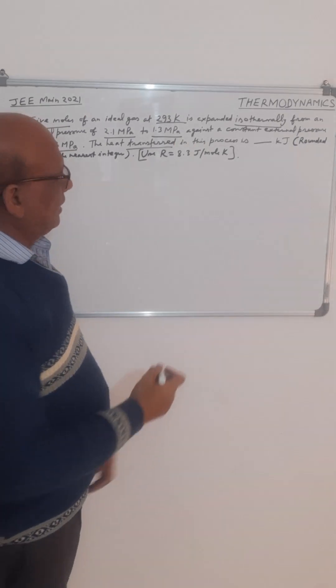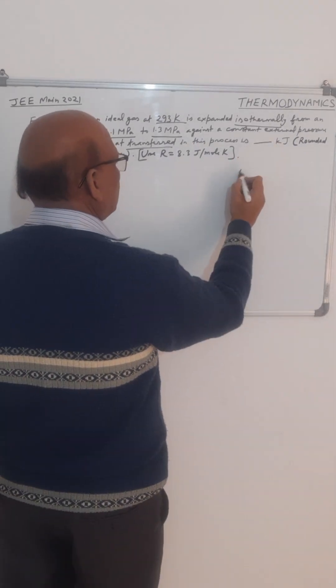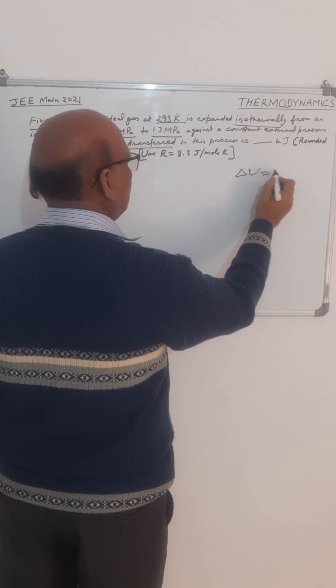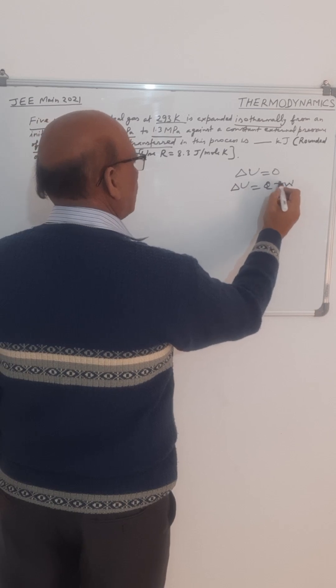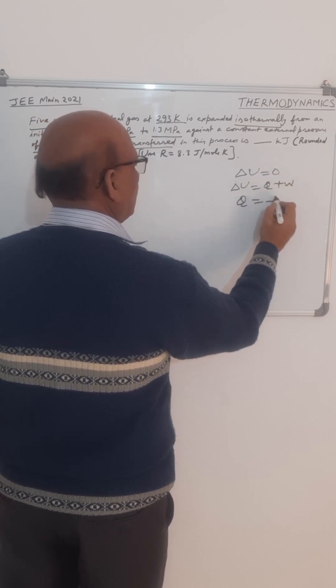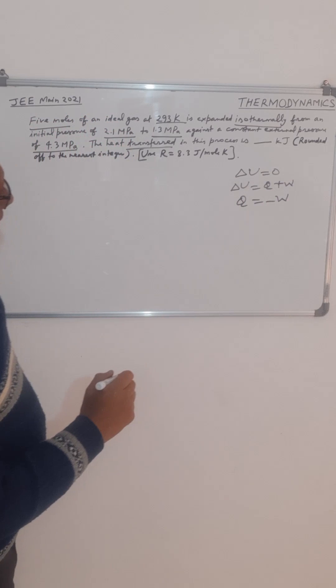We have to find heat transfer in this process, and this is an isothermal process. For an isothermal process we know that the change in internal energy is zero. So as per the first law of thermodynamics, delta U is equal to Q plus W. So Q plus W equal to zero, that means Q equal to minus W.